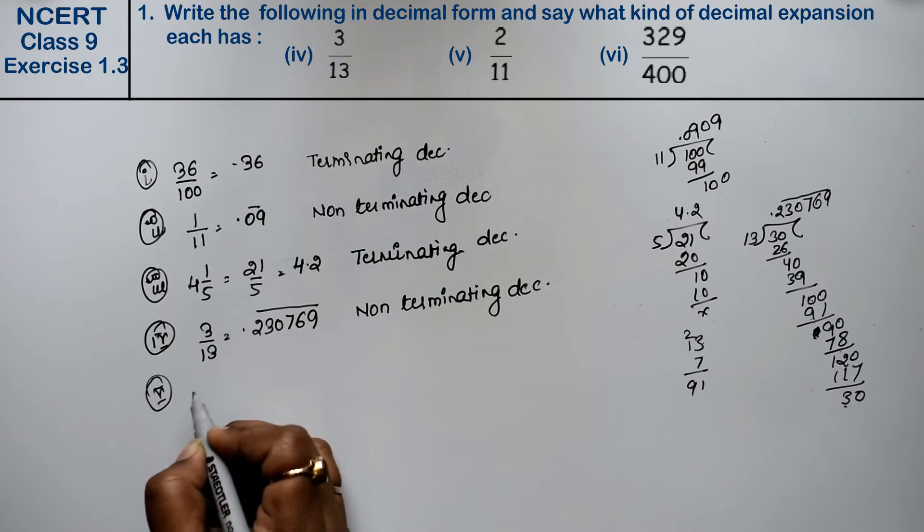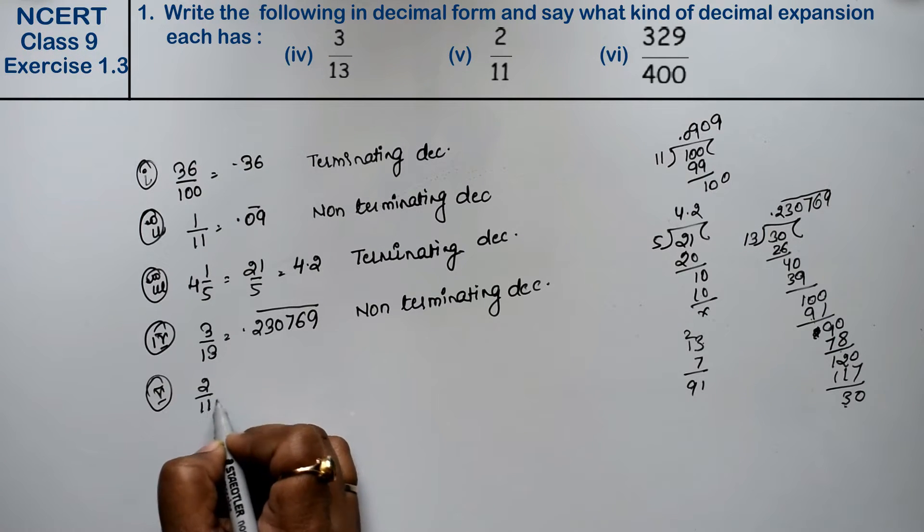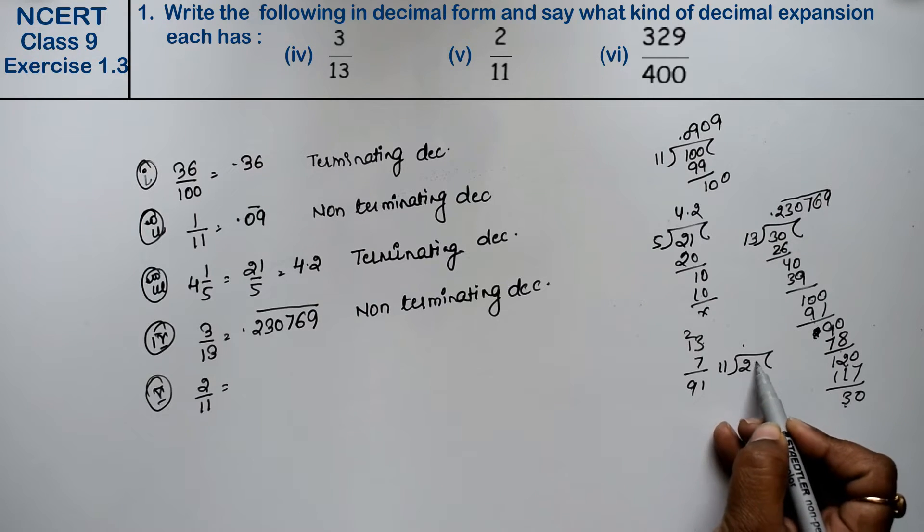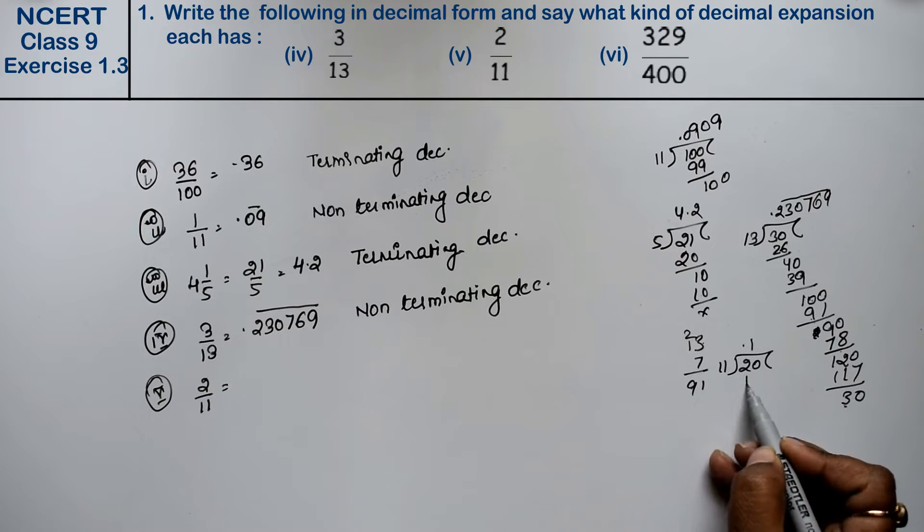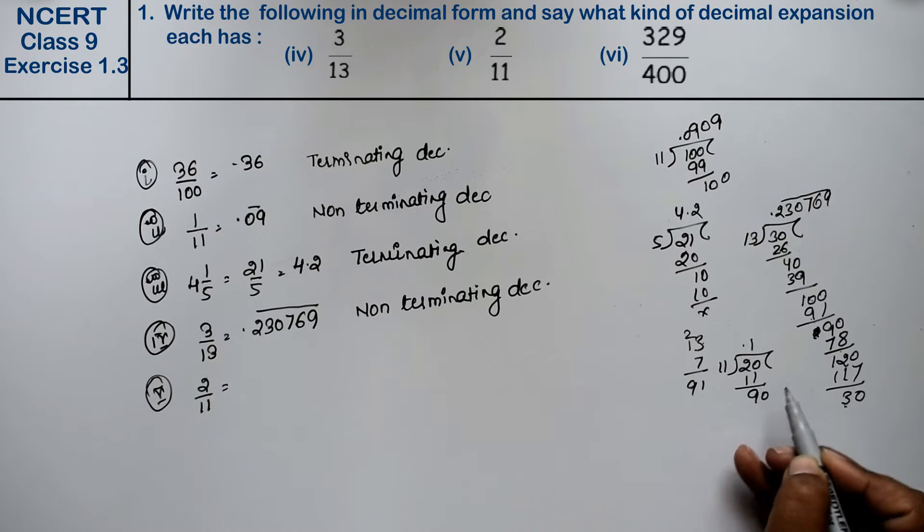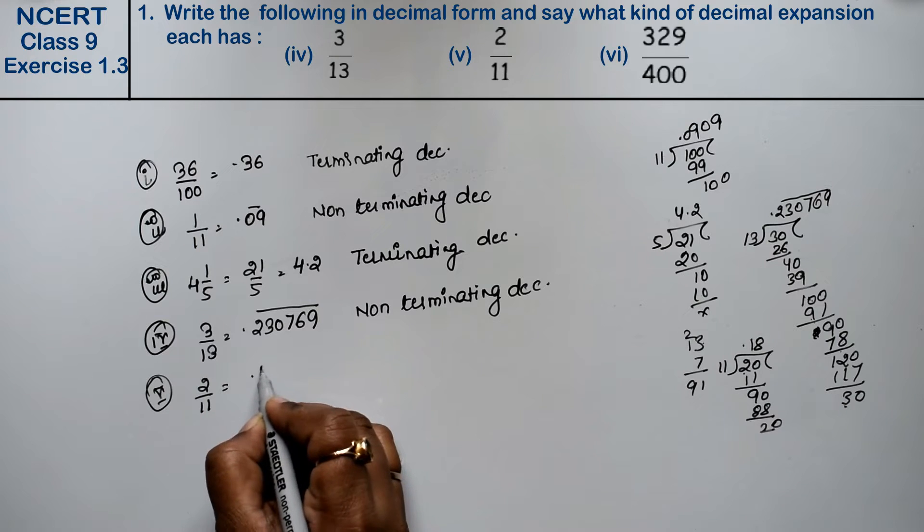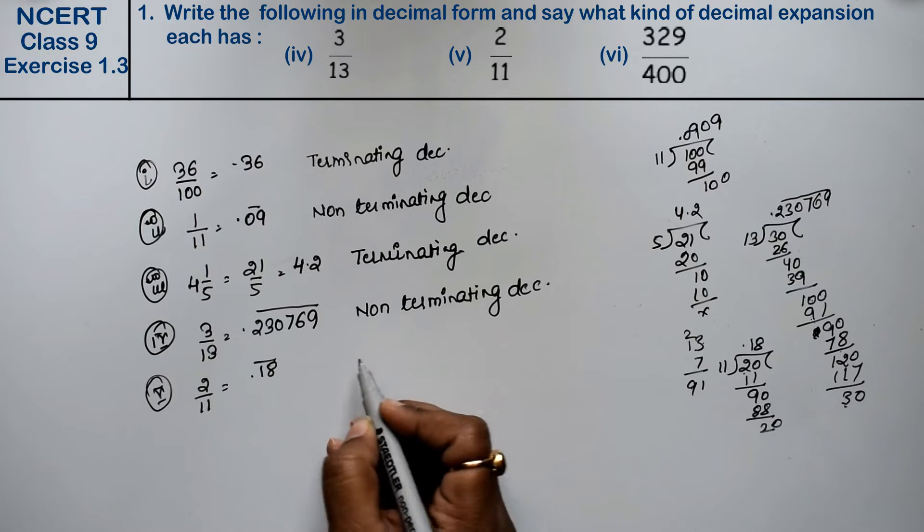Let's do fifth part. Fifth part is 2 upon 11. Friends, 11 divided by 2. Point is 0. 11 into 11, 9 is 90, 8 is 88. It's 2 upon 11. Then it's 0. Then it's 0.18 bar.